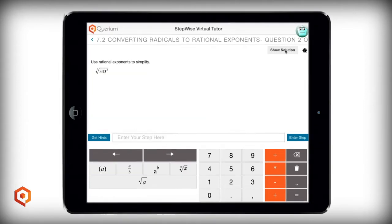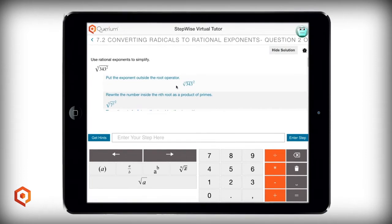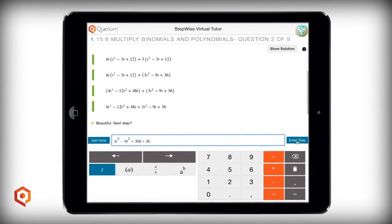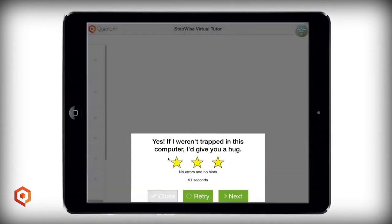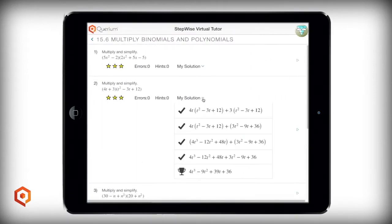Students can ask for hints and even click a button to see turn-by-turn directions at any point while solving a problem. When they finish the problem, they see a summary of how they did and even get stars for completing the question without errors or hints.